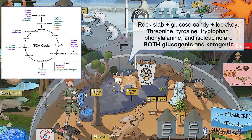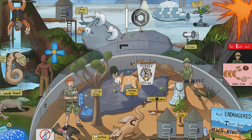See the giant rock slab underneath the three bears, tire swing, turkey wings, fennec fox, and ice pack? The rock slab contains glucose candy, and there's a lock and key where zookeepers can leave or enter the tundra from the desert area. The glucose candy and lock and key will help you remember that these amino acids are both glucogenic and ketogenic. If you can remember the two strictly ketogenic amino acids and the five glucogenic/ketogenic ones, then you already know which amino acids are exclusively glucogenic — the remaining 13.